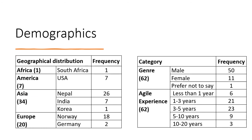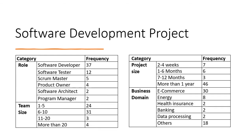During the demographic analysis, responses were received from seven different countries, and most of them were from Nepal and Norway. More than 80% were male participants, and most had three to five years of agile experience. In the software development project analysis, most respondents were software developers, with a team size of approximately six to ten members. Most were working on projects longer than one year, and most are related to the e-commerce domain.